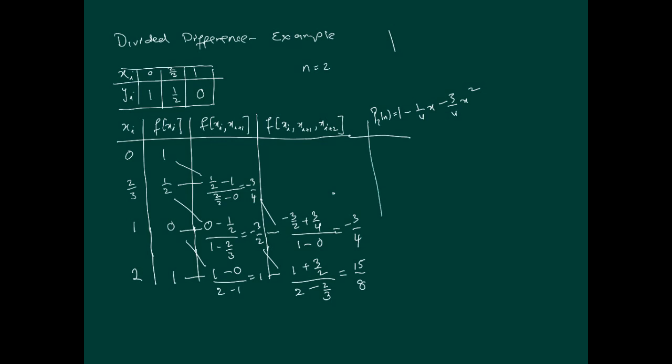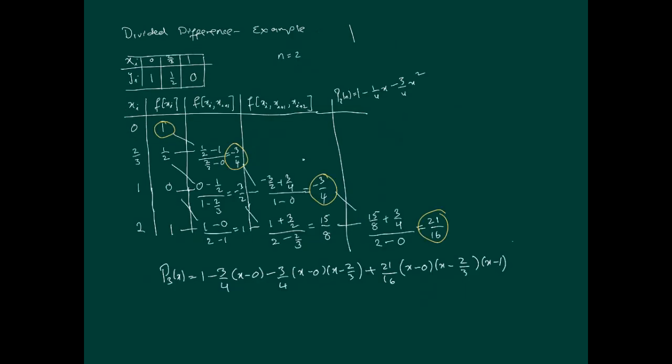Now you can see that we can go for another divided difference here, and that will give us, basically, the following. So we'll have 15 over 8 minus, or it'll become plus 3 over 4, and that'll be divided by, it'll be done as this, so it'll be 15 and 8ths plus 3 fourths divided by 2 minus 0, and that turns out to be, so as you can see here, the third order polynomial turns out to be this.